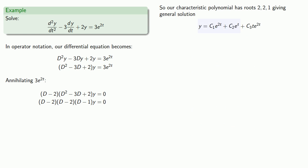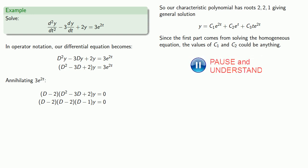Note the first part comes from solving the homogeneous equation. The values of c₁ and c₂ could be anything. Since they could be anything, we'll make them zero and try to find the undetermined constant c₃.